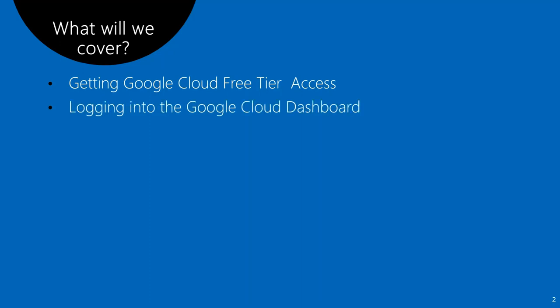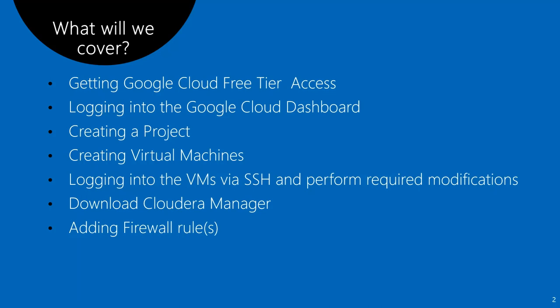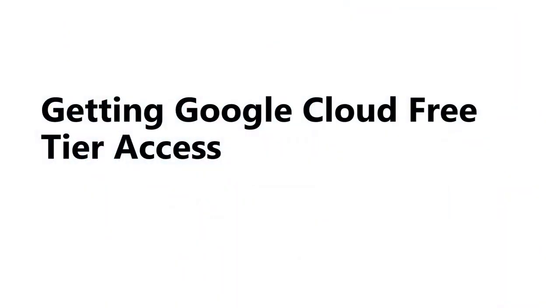Here are the steps we are going to cover: first, get Google Cloud free tier access; next, log into the Google Cloud dashboard; then create a project before creating virtual machines; once a project is created, create the VMs; log into each VM via SSH and perform some modifications; download Cloudera Manager; add or delete firewall rules as needed; and finally start the Cloudera Manager installation through the UI.